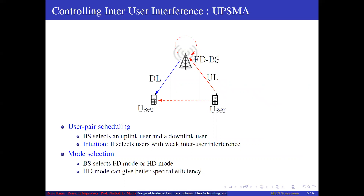The focus of this talk is inter-user interference. Controlling inter-user interference is the role of the user pair scheduling and mode selection algorithm. In user pair scheduling, the base station selects a pair of uplink and downlink users with weak inter-user interference between them, so that uplink and downlink SINRs are high. In certain scenarios, it can be shown that full duplex mode gives lower spectral efficiency compared to half duplex mode.